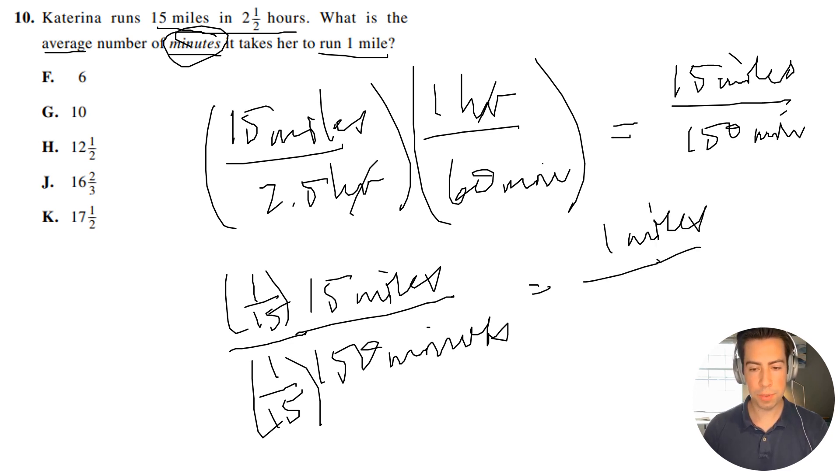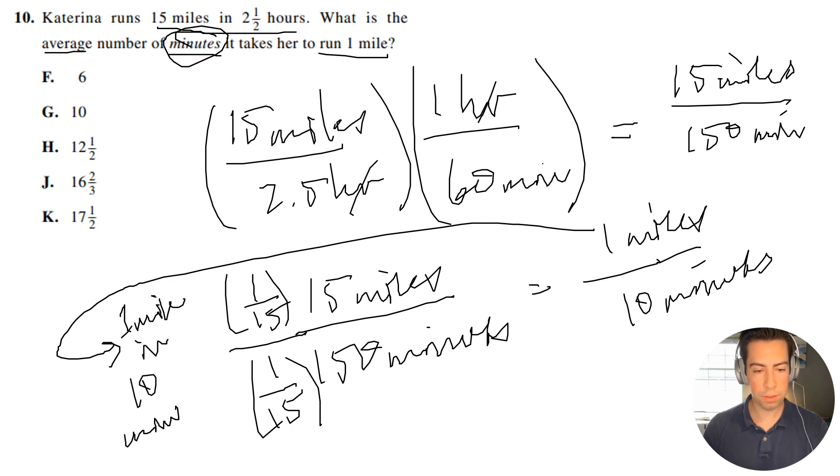So from this ratio we know that she goes 1 mile in 10 minutes. The answer is going to be G.